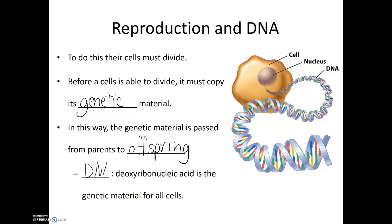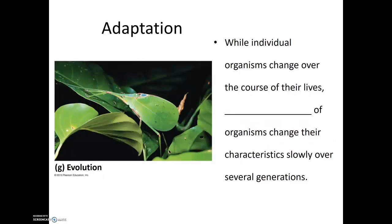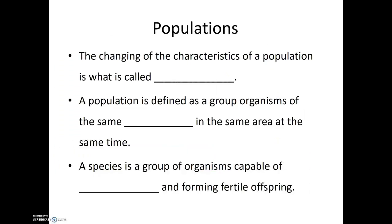DNA, or deoxyribonucleic acid, is the genetic material of all cells. After reproduction, the next characteristic true for all forms of life is adaptation. Adaptation is not something an individual does over the course of its life; instead, these are changes to a population over many generations. While individual organisms do change over the course of their life, it's populations of organisms that change their characteristics slowly over several generations. So adaptation or evolution does not happen to individuals — the changes in characteristics of a population is what we call evolution or adaptation.